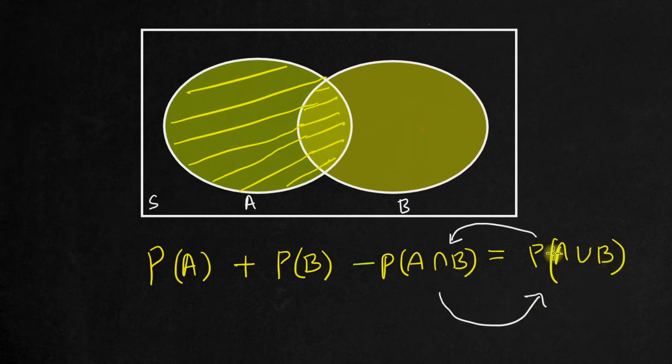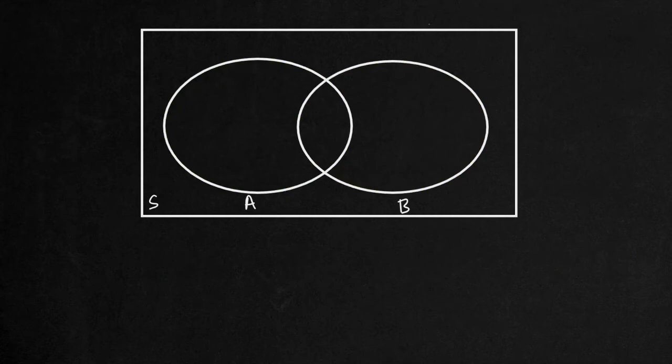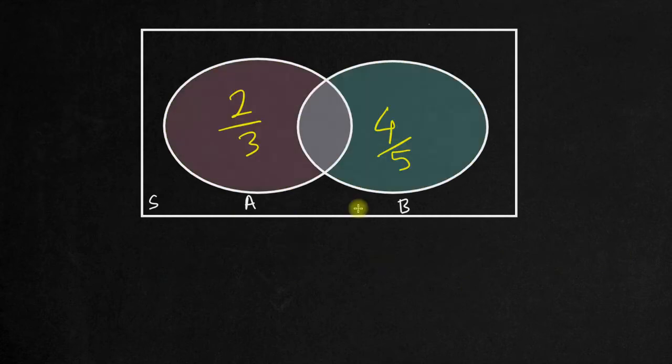We have written that the two events are given as one by two. The two events, either A or B, that means union.